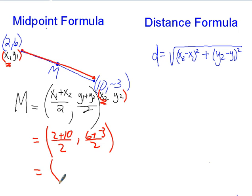That gives us 12 divided by 2 is 6. And 6 plus negative 3 is positive 3. Divided by 2 is just 3 halves. Or we could write 1.5. So the coordinates of the midpoint are 6, comma, 3 halves. And if you wanted to write 1.5, that would be fine too.